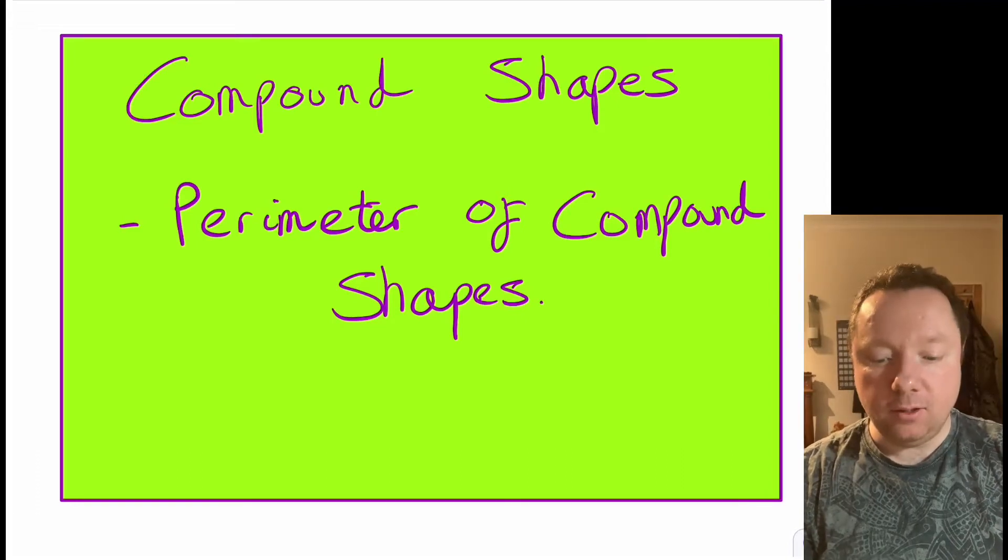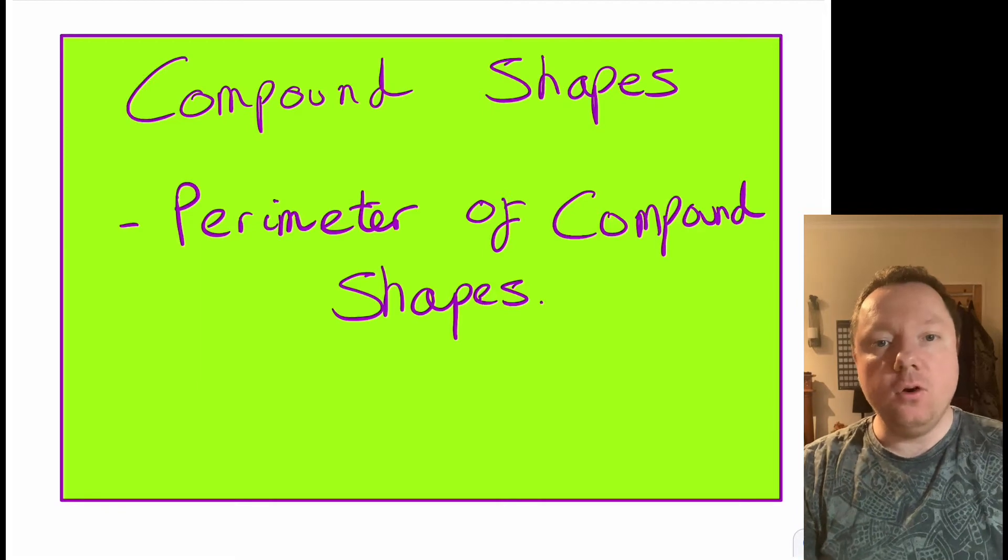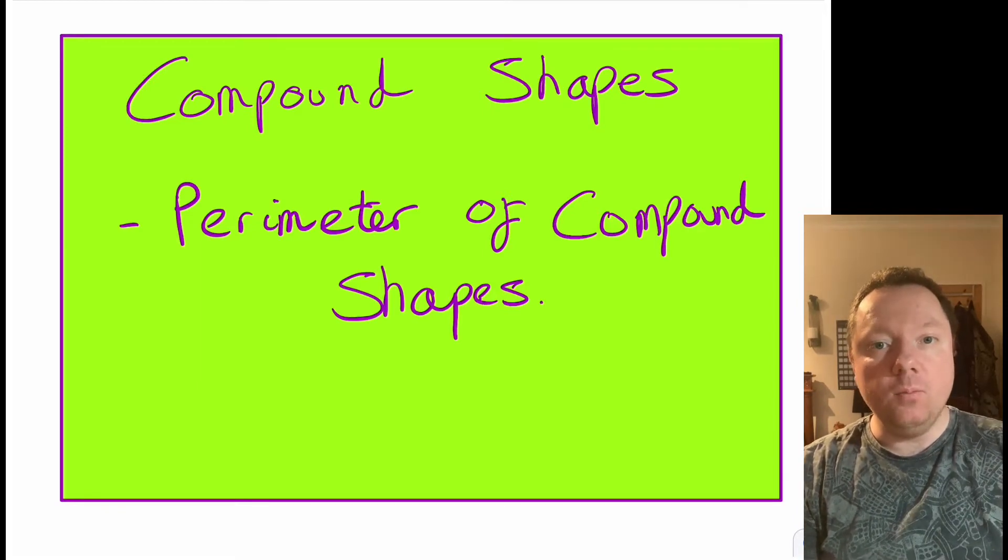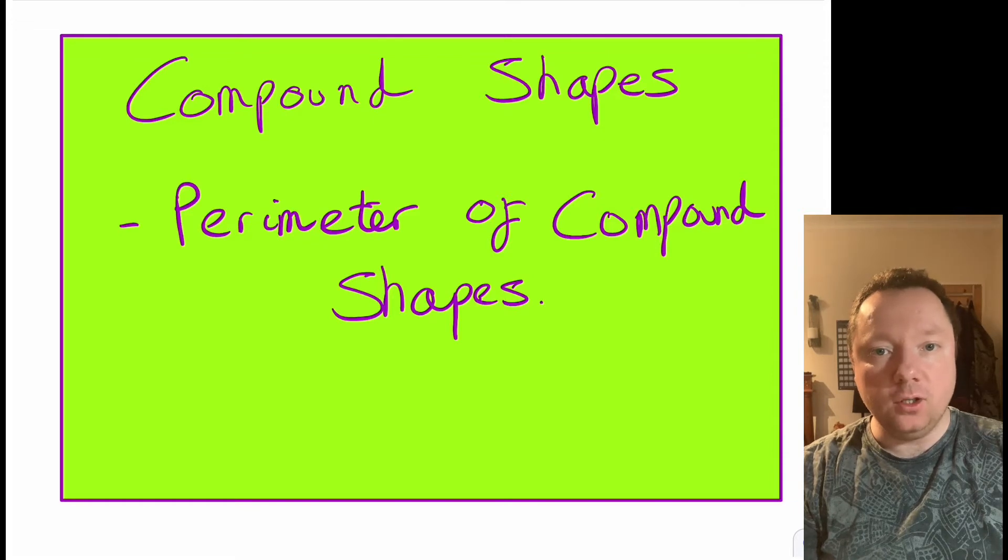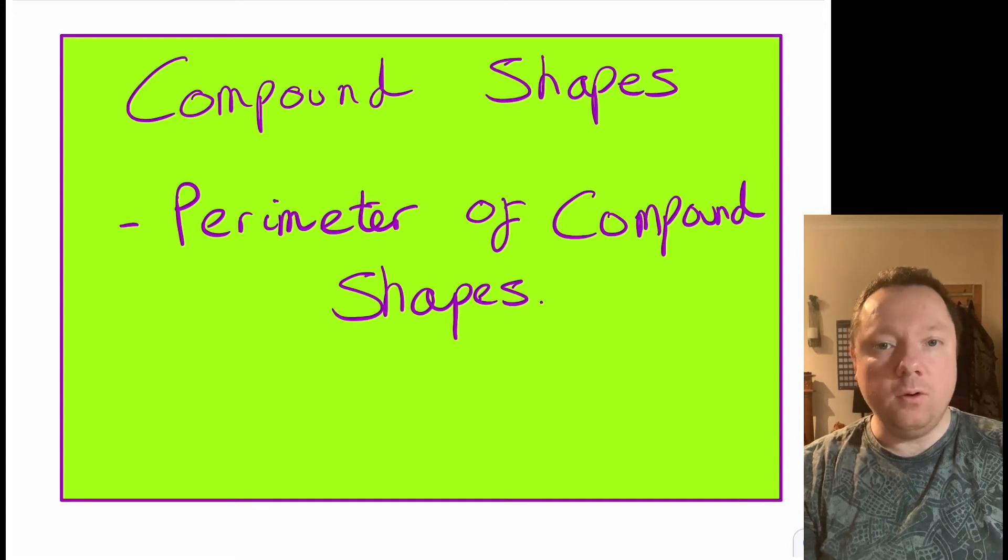Mr Claren here from Claren Maths. Today we're going to look at compound shapes and the perimeter of compound shapes. This follows on from the previous lesson where we did the area of compound shapes involving fractions of a circle. This time will be the perimeter involving fractions of a circle. I'll do a couple of examples and then we'll have a worksheet that you can try.